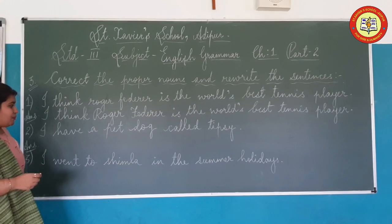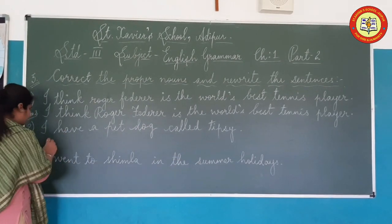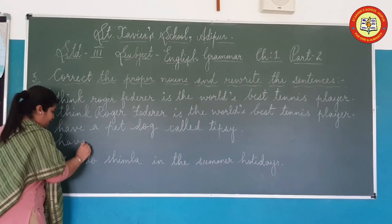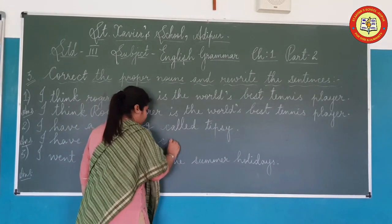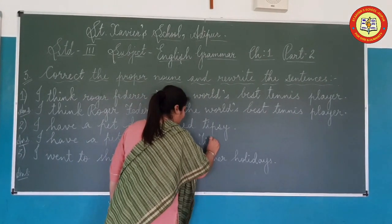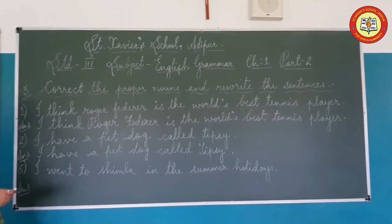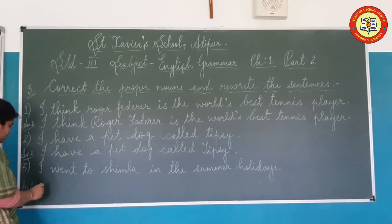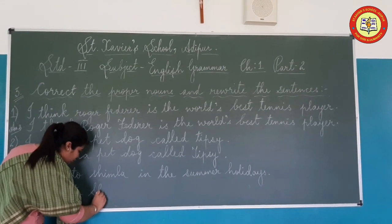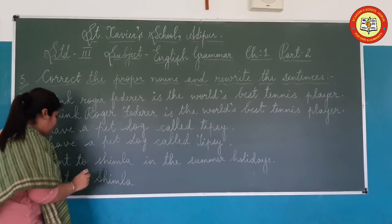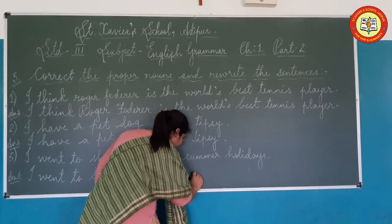Second sentence: 'I have a pet dog called tipsy.' Here, the pet dog is named Tipsy. So what you will do is write T as capital: 'I have a pet dog called Tipsy.' Third sentence: 'I went to shimla in the summer holidays.' Shimla is the name of the place, so write S as capital: 'I went to Shimla in the summer holidays.'